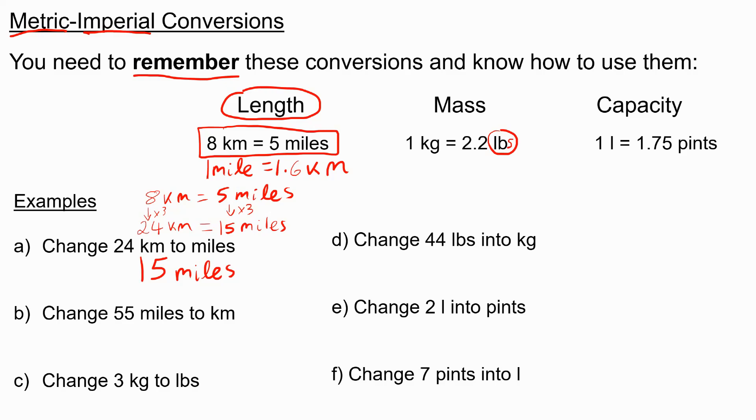If I want to change 55 miles into kilometers, we just look at it the other way. We know that 8 kilometers is 5 miles. 5 to 55, I would multiply by 11. So I times both sides by 11, and I get 88 kilometers equals 55 miles.